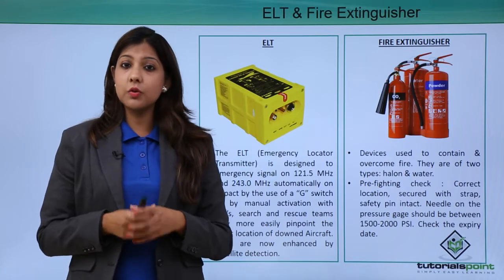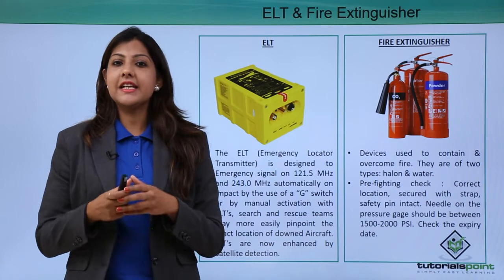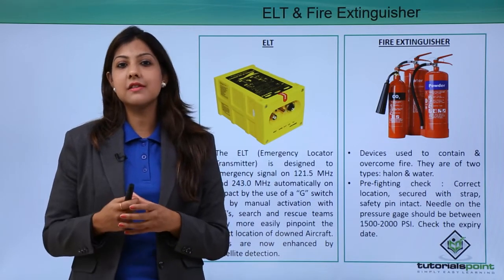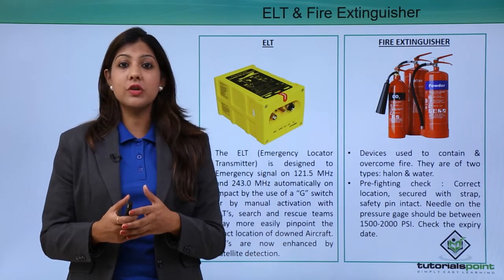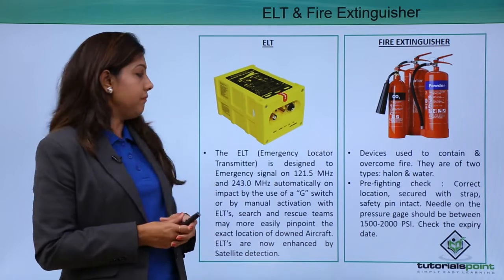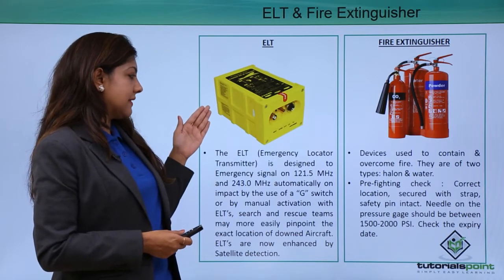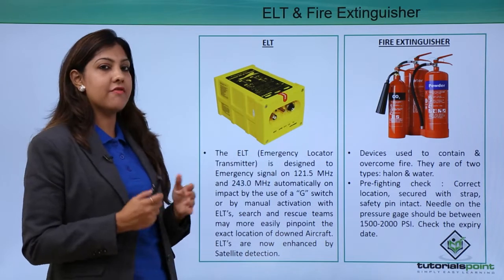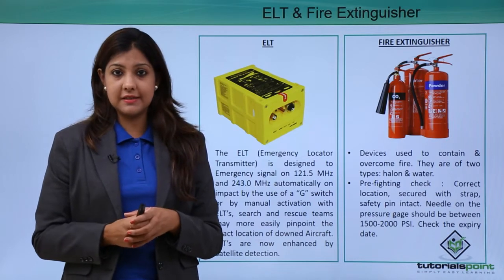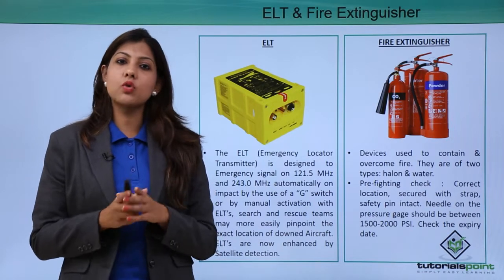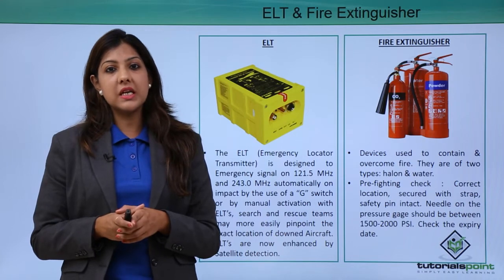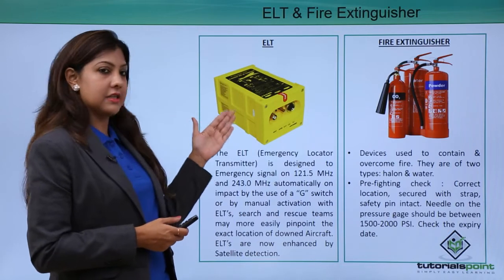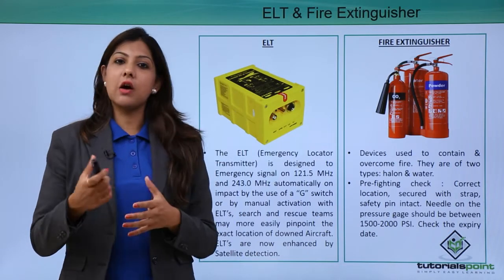An ELT is an Emergency Locator Transmitter. During an emergency it sends signals to search and rescue teams to indicate that you are lost and need help — essentially an SOS signal. It operates on a frequency of 121.5 MHz and can be used both on land and at sea when an aircraft ditches into water.